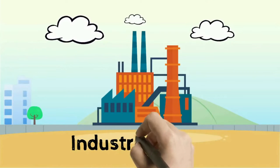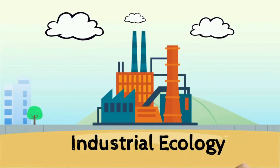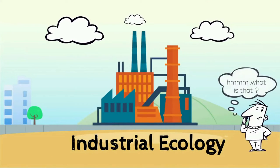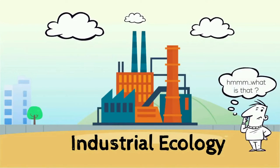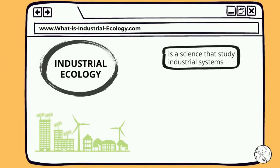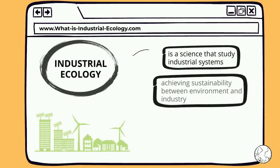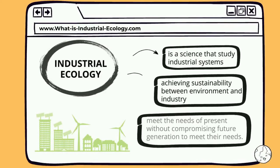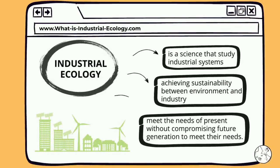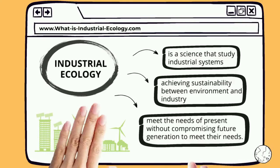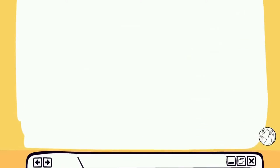Let's talk about industrial ecology. Industrial ecology is a science that studies industrial systems in order to achieve sustainability between the environment and industry, to meet our needs without compromising future generations' ability to meet their needs — also known as sustainable development.